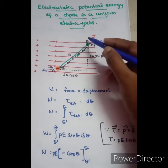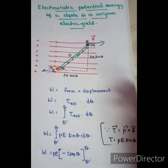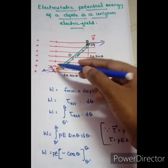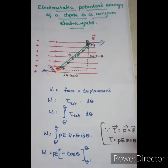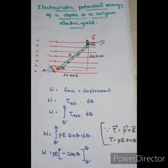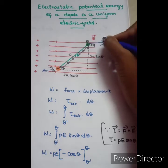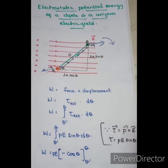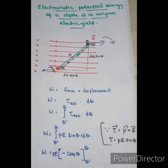The positive charge goes in the direction of the field, and the negative charge goes in the opposite direction. These two forces in opposite directions create a rotating effect. That rotating effect is the torque. So the torque acts in this direction, creating a rotation.